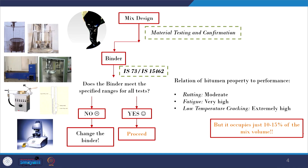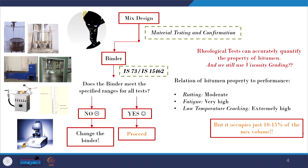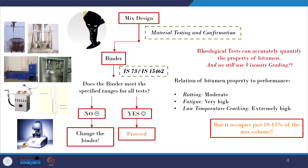It is interesting to note that although the role of bitumen is so high with respect to different aspects, the amount of bitumen used for production of bituminous mixture is very low — approximately 10 to 15 percent of the total volume. On the other hand, aggregates occupy more than 80 percent of the volume in the mix. Since in India we mostly use viscosity graded bitumen, which does not give a complete idea about the viscoelastic properties of bitumen over a wide range of temperatures during the service period, it is important to move towards more advanced testing to quantify bitumen properties.